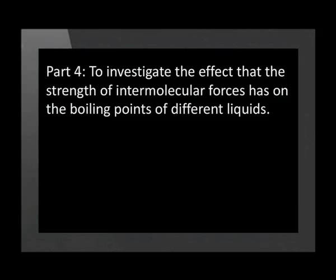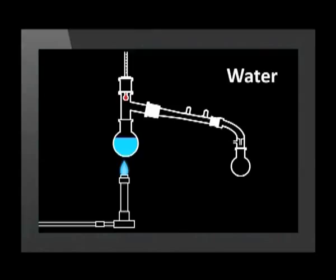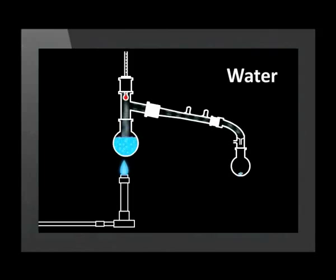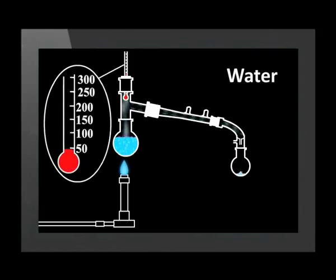In Part 4, we investigate the effect that the strength of intermolecular forces has on the boiling points of different liquids: water, oil, glycerine, nail polish remover, and methylated spirits. Some of these are flammable, so we will not boil them in an open beaker. We use a thermometer in a flask and heat each liquid to measure the temperature at which they boil.